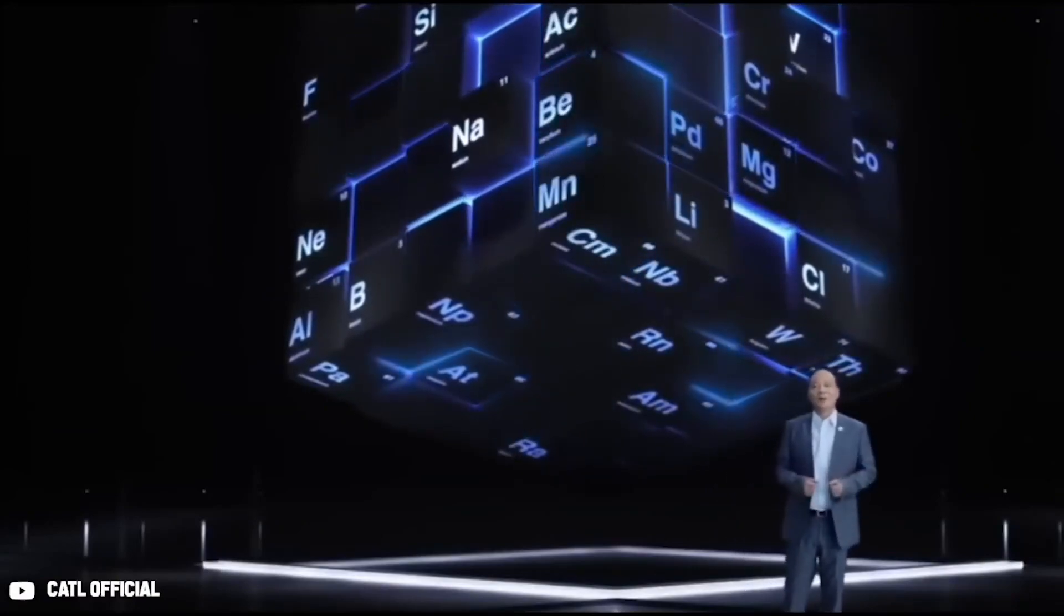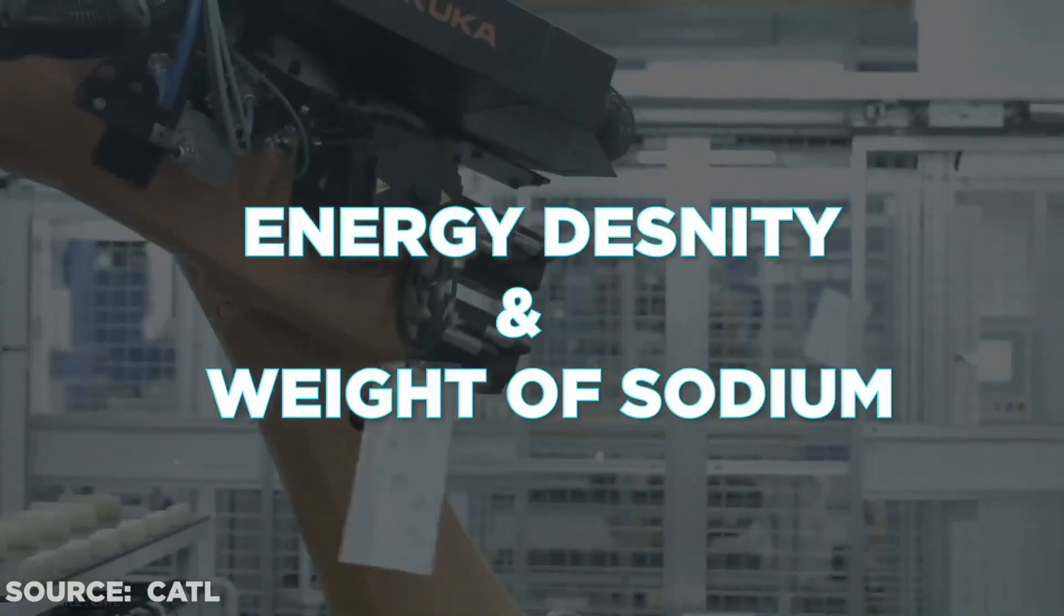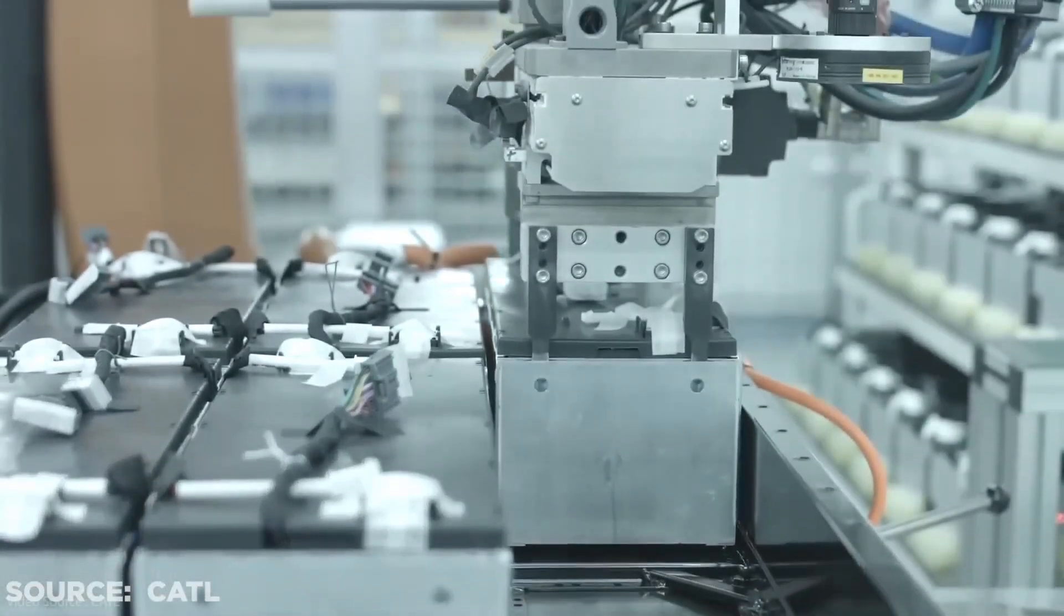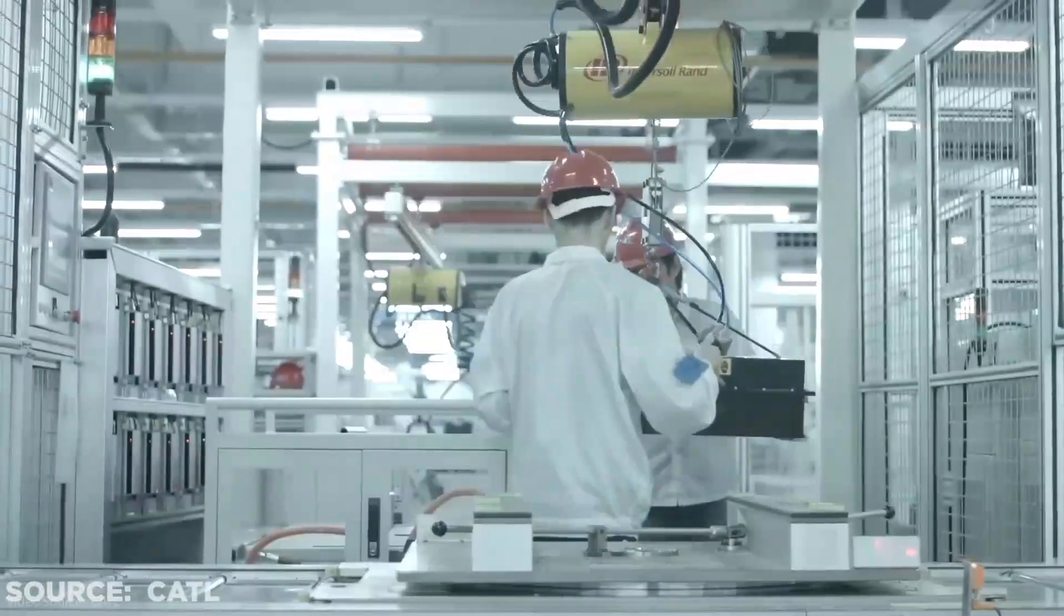The key disadvantages of sodium over lithium were its energy density and weight. Compared to lithium-ion batteries, which have a capacity of well over 200 watt-hours per kilogram, sodium-ion batteries only have a capacity of roughly 150 watt-hours per kilogram.